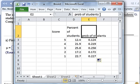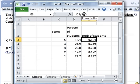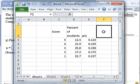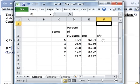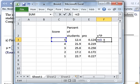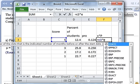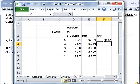And then I'll just do x times the probability, which is the score times what you have in E. So you're going to do equals C3 times E3. And you're going to want to fill that down.